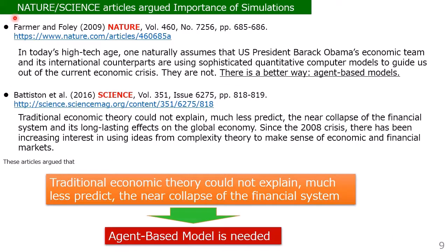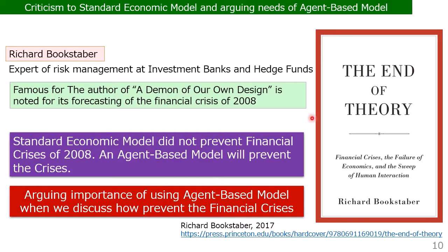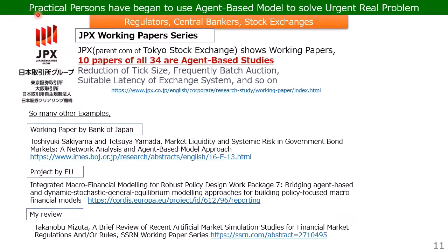Nature and Science articles have also argued the importance of simulations. Traditional economic theory could not explain — much less predict — the near collapse of the financial system in 2008. So agent-based models are needed. There is also a very famous book criticizing the standard economic model and arguing for the need of agent-based models. Practical practitioners — for example, regulators, central bankers, and stock exchanges — have begun to use agent-based models to solve urgent real problems.